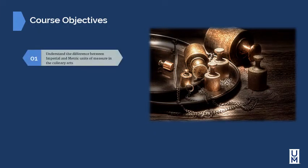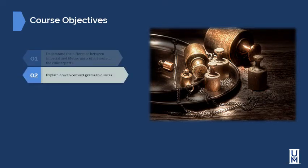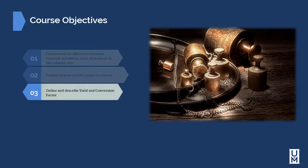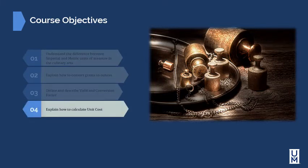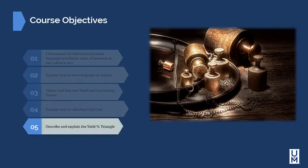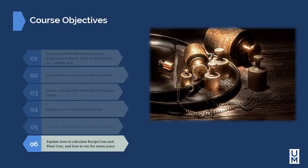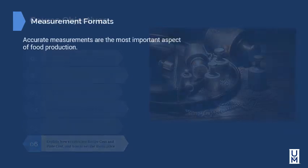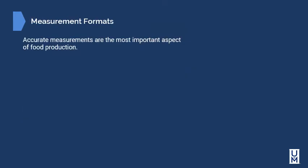The objectives for this module are: understand the difference between imperial and metric units of measure in the culinary arts; explain how to convert grams to ounces; define and describe yield and conversion factor; explain how to calculate unit cost; describe and explain the yield percent triangle; explain how to calculate recipe cost and plate cost; and how to set the menu price. Accurate measurements are the most important aspect of food production.